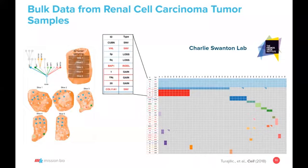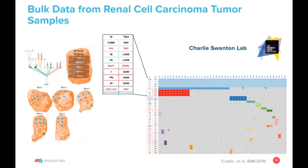What they saw was that they found single nucleotide variants, loss of heterozygosity, CNV gains, and indels. We were able to take these same samples and run them on the Tapestry platform in order to look at both SNVs and CNVs. The strength of this study was that we already knew from bulk sequencing what each sample contained.